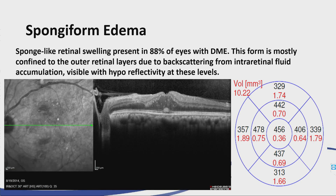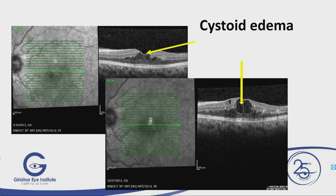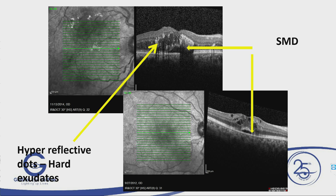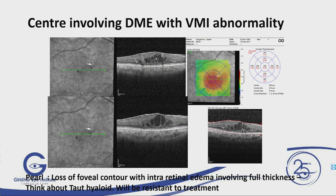This is cystoid edema — the arrow mark shows cystoid edema. This is serous macular detachment, and serous subfoveal detachment cases respond well to anti-VEGF injection with better visual outcomes. An important finding I have seen in many cases on treatment is a taut posterior hyaloid or an ERM-like picture — that will not respond to injections regardless of how many you give. That has to be specifically looked for.